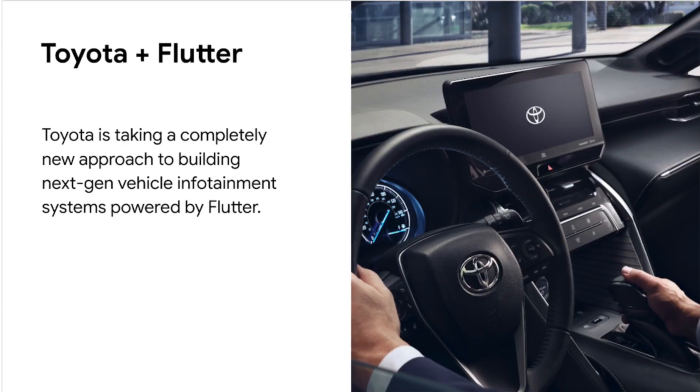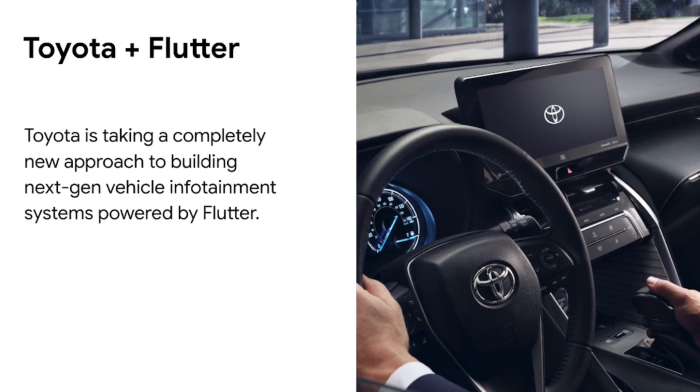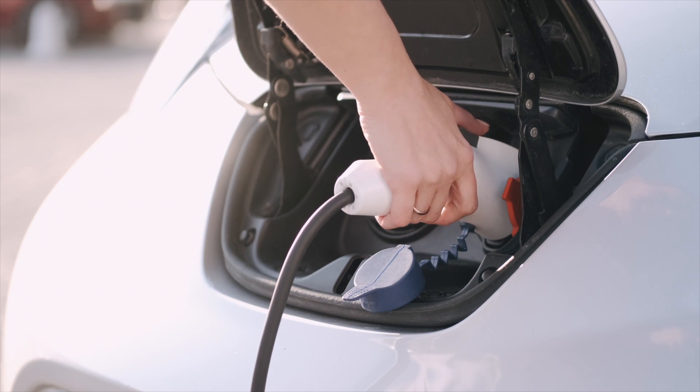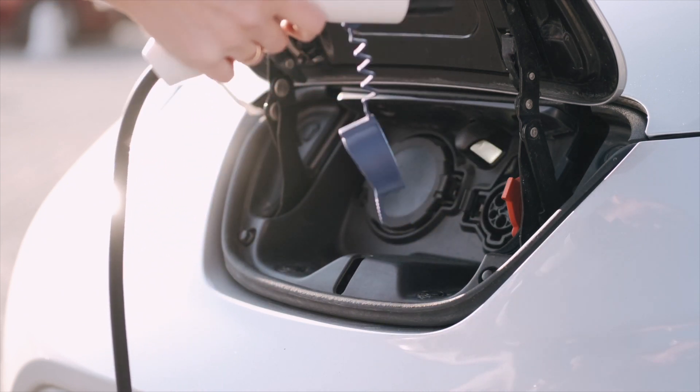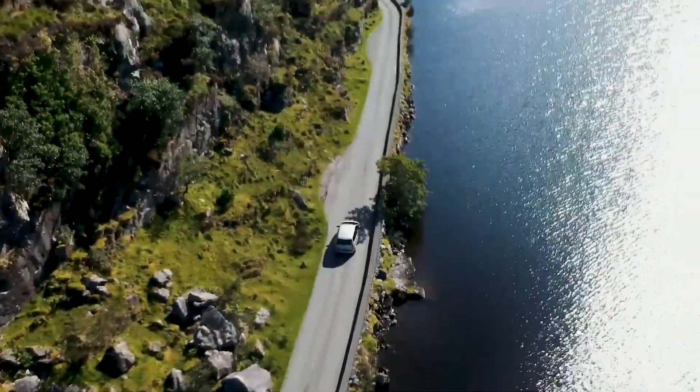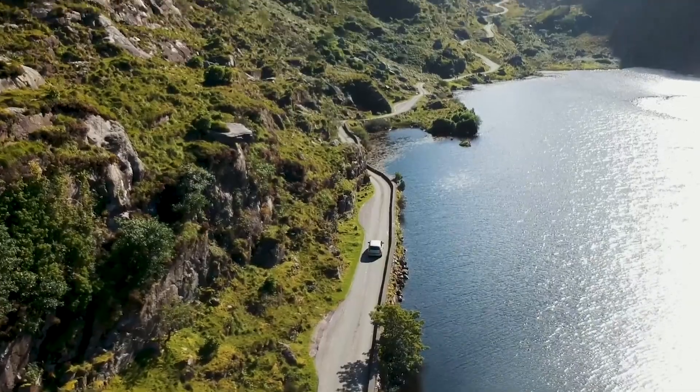Toyota is going to be using Flutter for its infotainment system, and that's probably the most exciting of the three. Toyota using Flutter in its vehicles is basically another platform being supported. If you look at the trends toward electric vehicles and autonomous driving, it's going to change how we use our cars — if you don't have to focus on the road, you'll have free time to be entertained. Building an app that can run in your car with Flutter is a whole new market opening up.